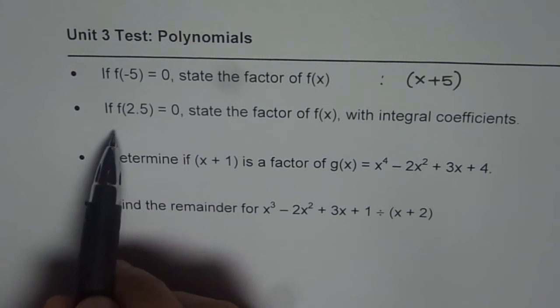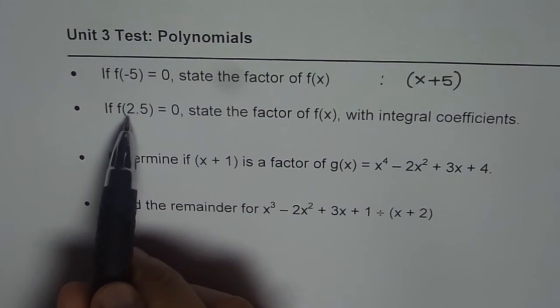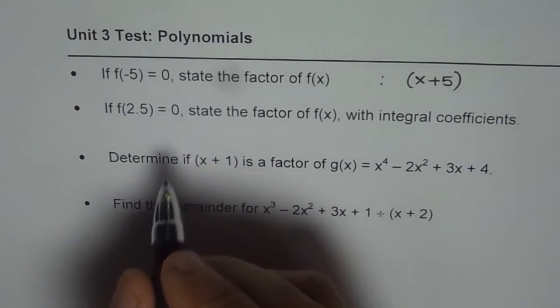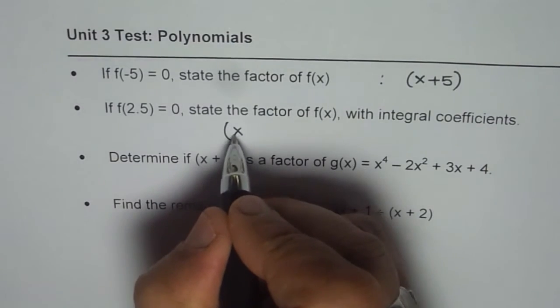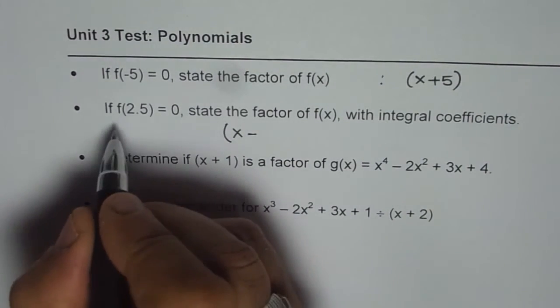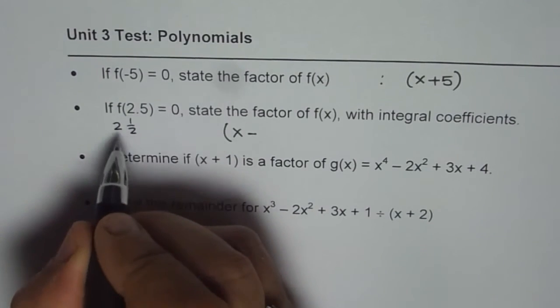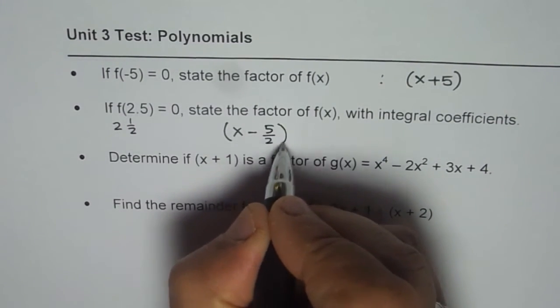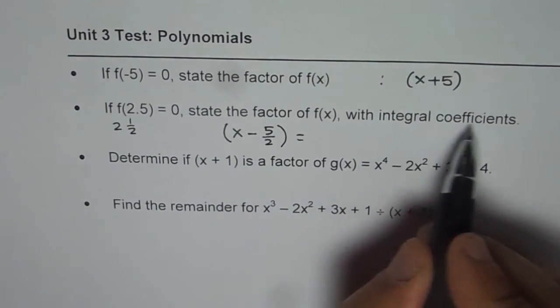The second one is, if f(2.5) is 0. So 2.5 is 5 over 2, correct? So here, the factor will be (x - 5/2). But we need to write it as integral coefficients.